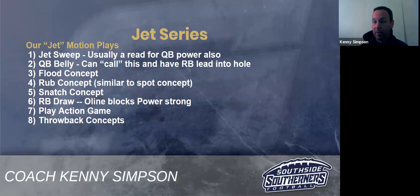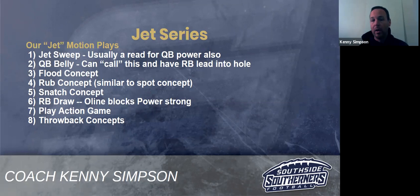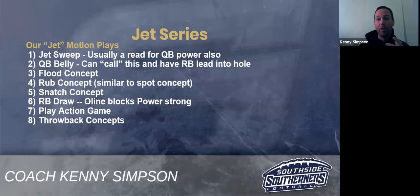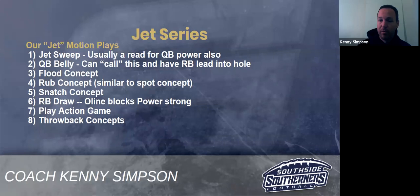Here are all the things we'll run off of jet — I don't even have belly read on there, although I'm going to show you one clip. We feel like we have nine different concepts off of jet motion. I'm a big believer in simple, a rule-of-three guy. We have three rollout passes, three quick side runs, and some play actions and specials. We can tag these so it makes it look more complicated to a defense.